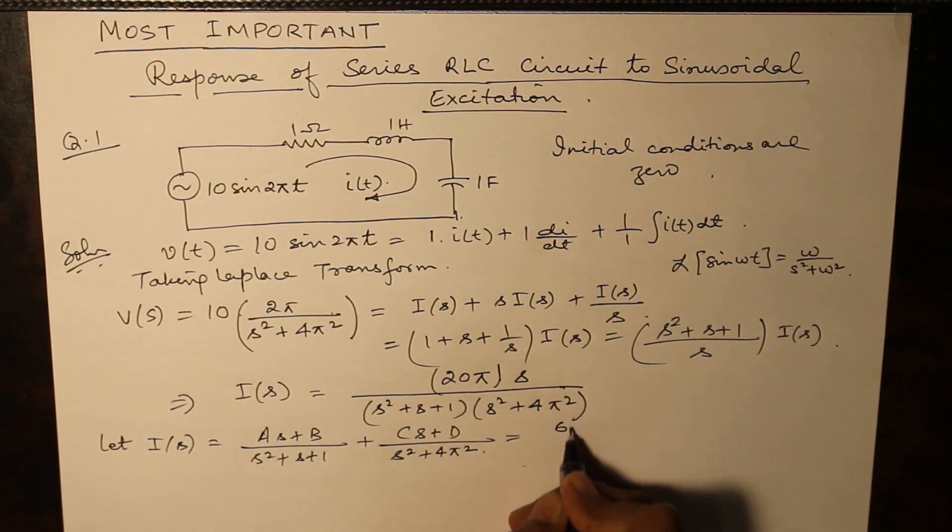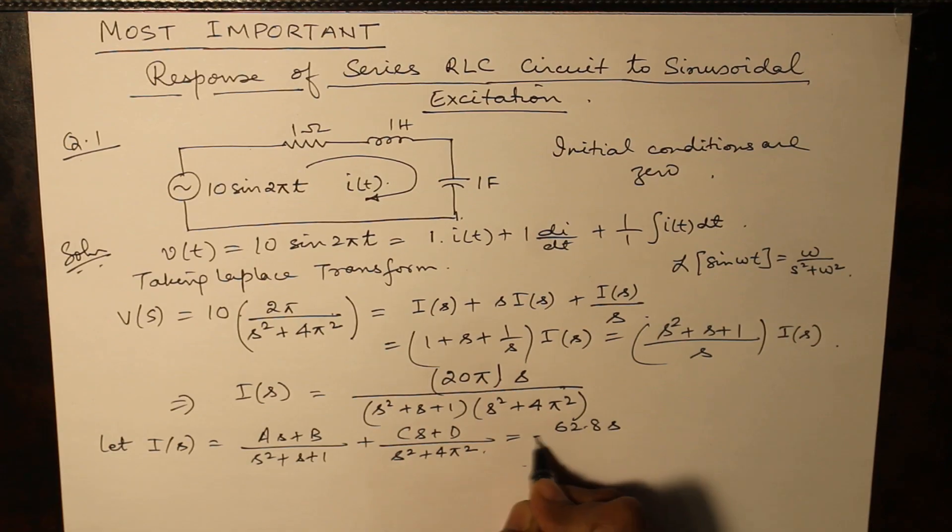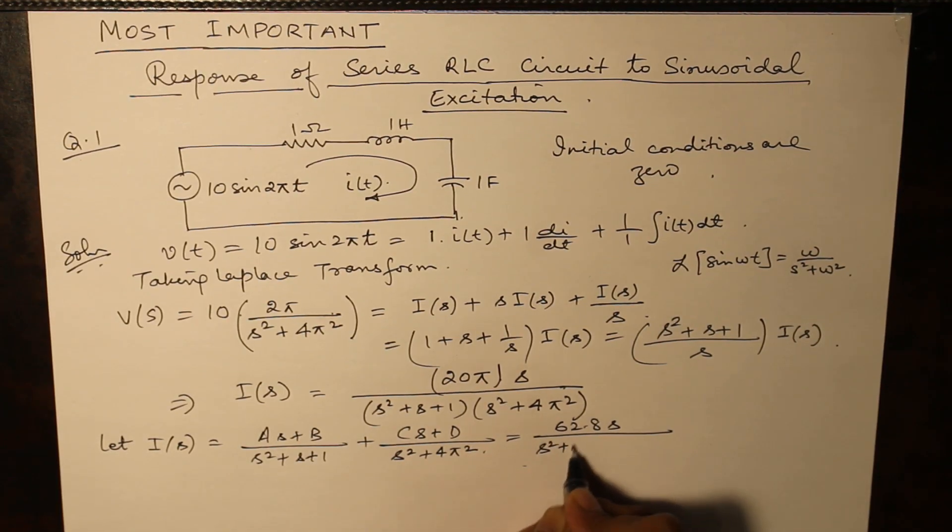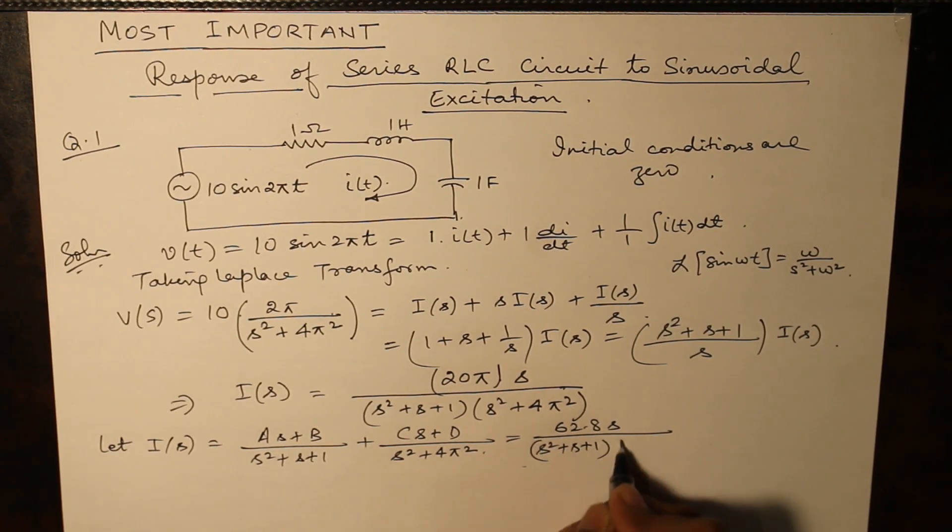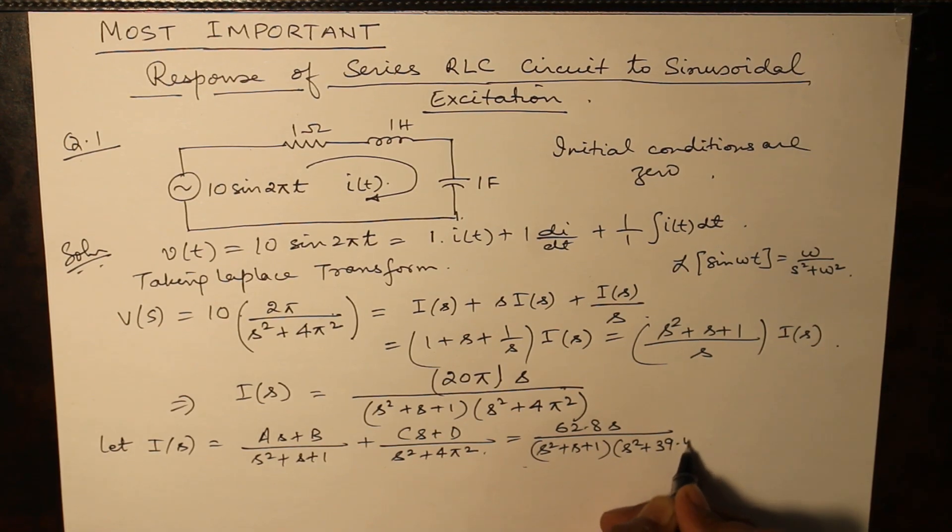I(s) which is equal to 62.8s over (s² plus s plus 1) and (s² plus 39.43).